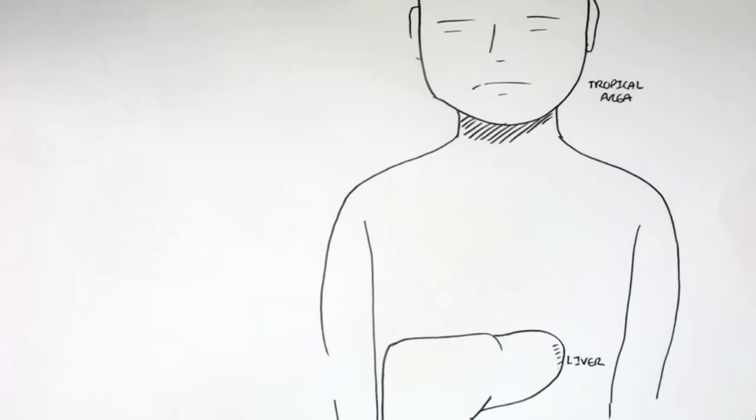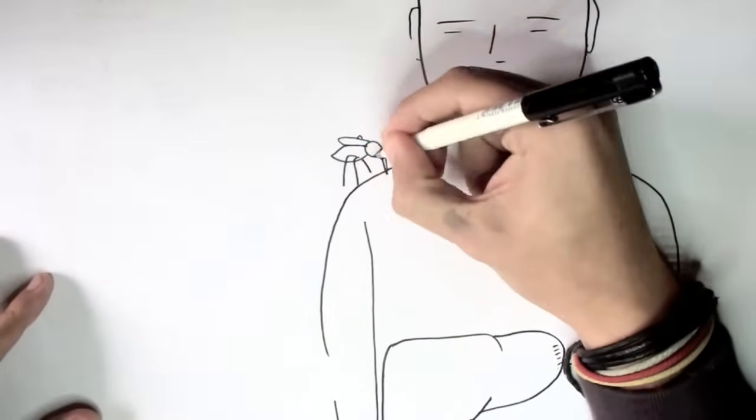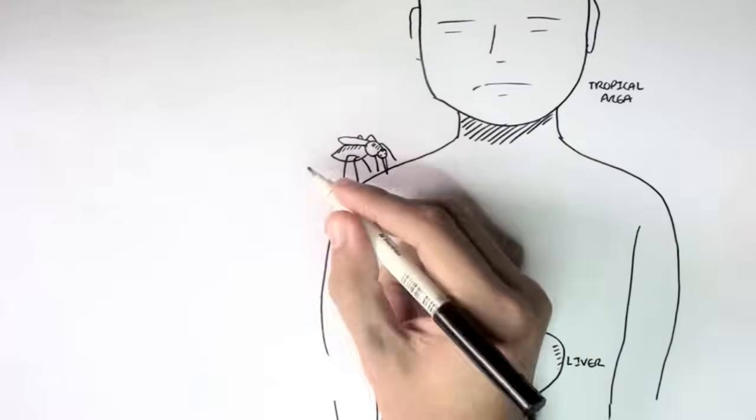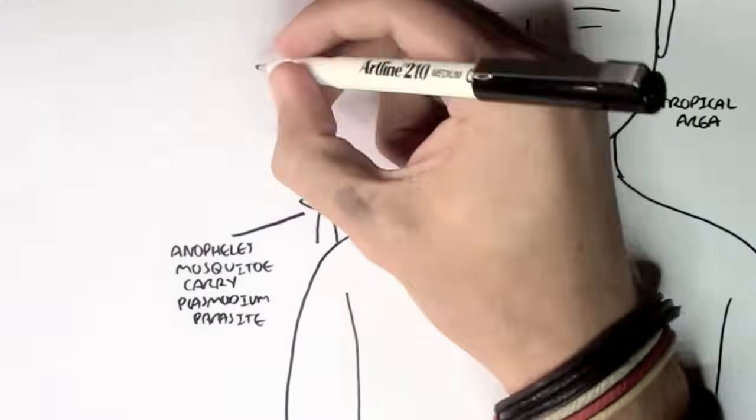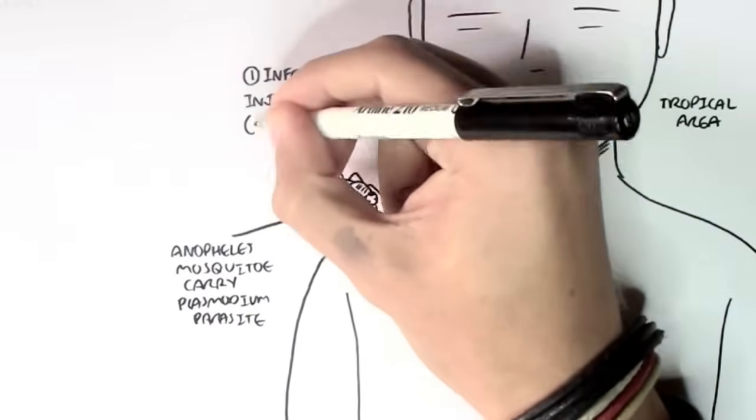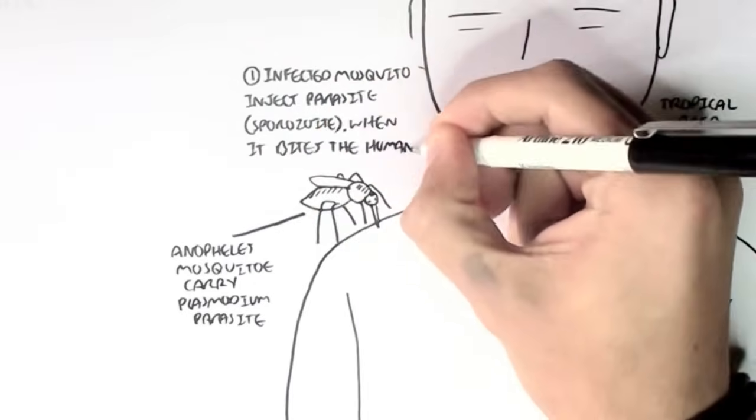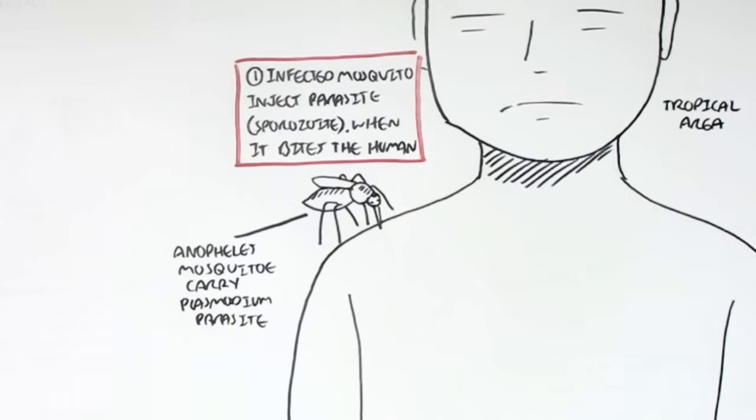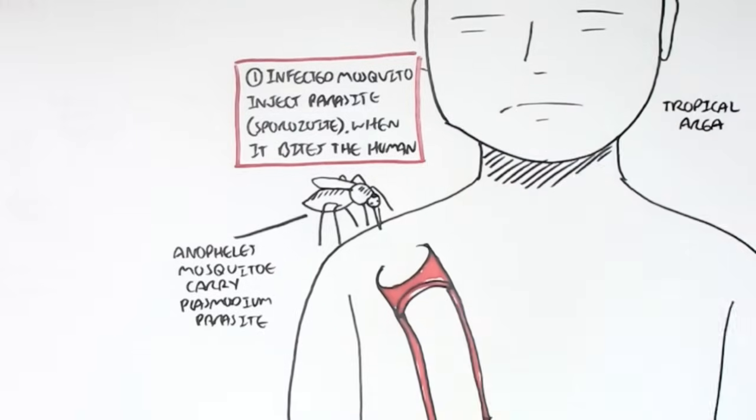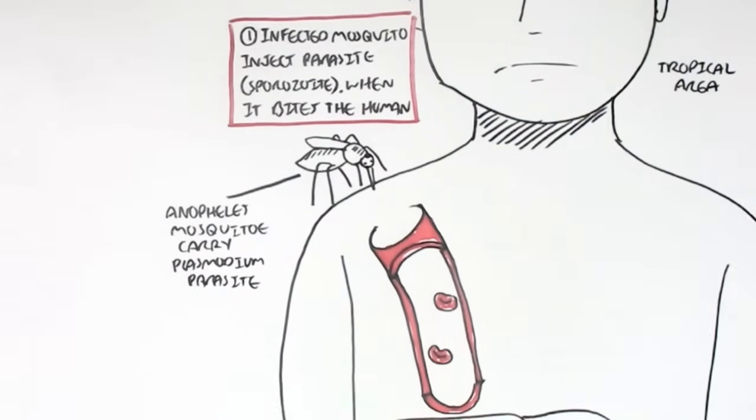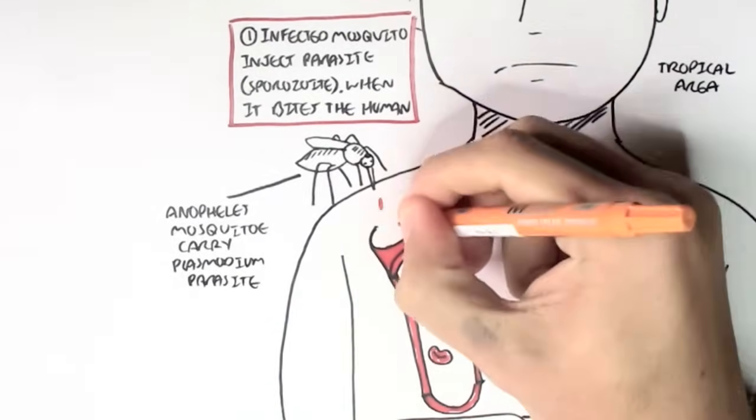Now, here I am drawing a female Anopheles mosquito, which is carrying the Plasmodium parasite. It's a female, because female mosquitoes are the one that bites and sucks blood from humans and infects humans. So, first what happens, during the life cycle, is that a mosquito injects a sporozoite when it bites the human. So, the sporozoite gets injected into the bloodstream.